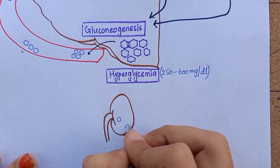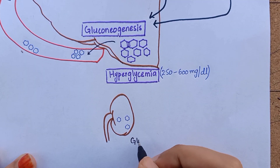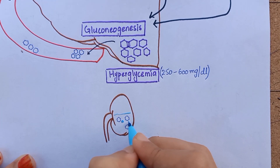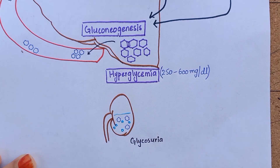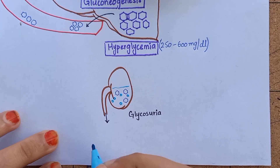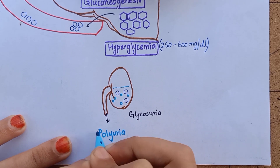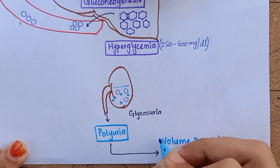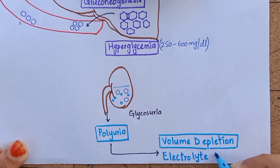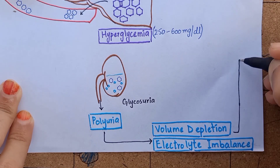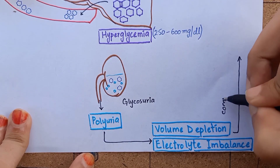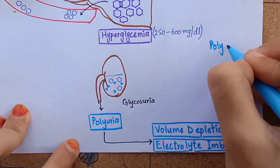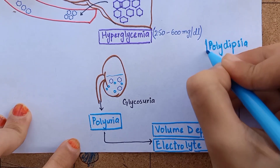Hyperglycemia usually in the range of 250 to 600 mg per deciliter exceeds the renal threshold for reabsorption of glucose, and glucosuria occurs. The kidneys excrete more water to dissolve excess glucose, inducing an osmotic diuresis and polyuria, causing a profound loss of water and electrolytes. Dehydration caused by renal water loss triggers the osmoreceptors of the thirst center in the brain, which causes intense polydipsia.